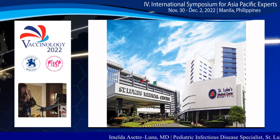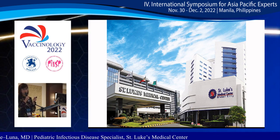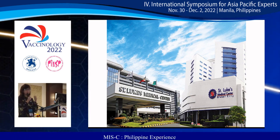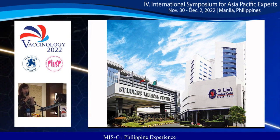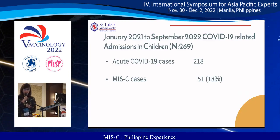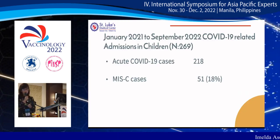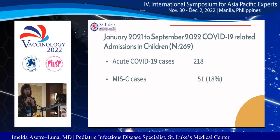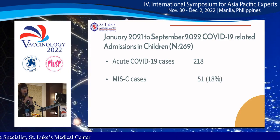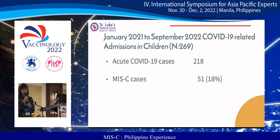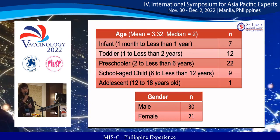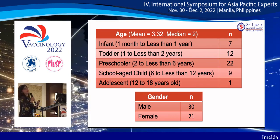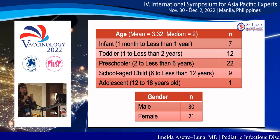I'll be sharing the MIS-C cases from two tertiary centers where I work — St. Luke's Medical Center Quezon City and Bonifacio Global City, both JCI-accredited. From January 2021 to September 2022, there were 269 total COVID-related admissions in children: 218 acute COVID cases and 51 MIS-C cases, accounting for 18% of admissions. The mean age is three years and median age is two, which contrasts with international data showing MIS-C usually in older children.